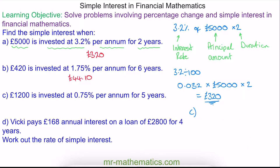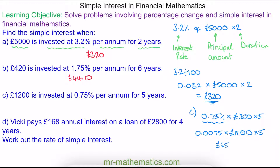For question C, we have an interest rate of 0.75%, multiplied by our principal amount, with a duration of five years. Converting to a decimal gives 0.0075, multiplied by £1,200, multiplied by five, which gives £45 interest over five years.